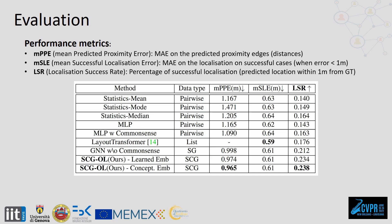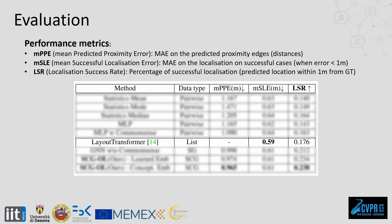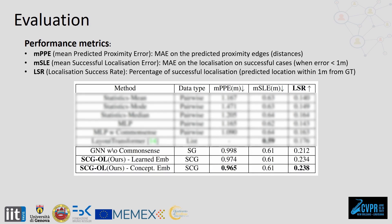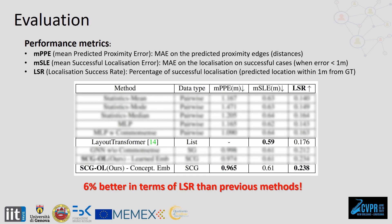We use the LSR when comparing different methods. Among the baselines, the best one is Layout Transformer, a transformer-based model for layout prediction that we adapted for the localization task. This method can perform spatial reasoning and achieves an LSR of 17.6%. Our graph-based approach is the best performing method overall. The variant that only performs spatial reasoning achieves an LSR of 21%, while the variant that uses the Spatial Common Sense Graph reaches 23.8%. Compared to previous methods, our method is 6% better in terms of LSR.